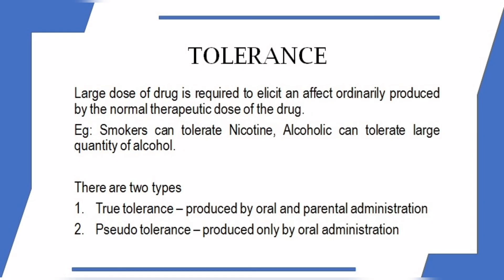Tolerance means that repeated use of a drug reduces its effect. For example, if you smoke nicotine continuously, you will need more to achieve the same effect. There are two types of tolerance: true tolerance and pseudo tolerance. If a drug shows tolerance by both oral and parenteral routes, it is true tolerance; if only by oral route, it is pseudo tolerance.